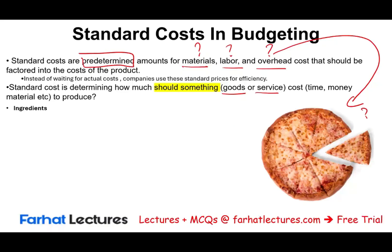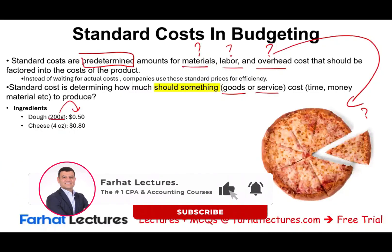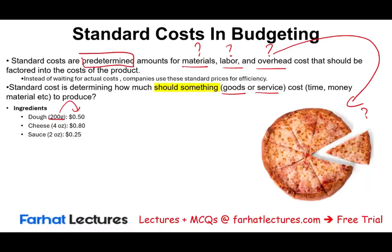They need to know the ingredients — what goes into a pizza. The dough: they need to know the quantity, how much they need to use — 200 milligrams — and how much it should cost them to buy the dough. The cost of the dough could go up or down due to market conditions. They need to know how much cheese they need to use and what the cost should be. In our example: 200 grams of dough at $0.50, 4 ounces of cheese at $0.80, sauce 2 ounces at $0.25. Those are the ingredients for a cheese pizza — we call this direct material.